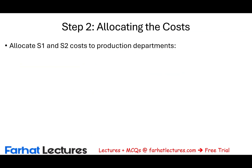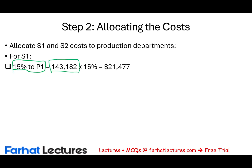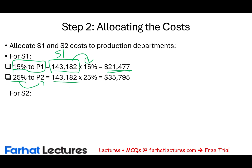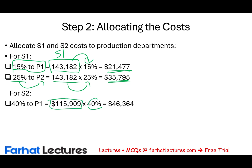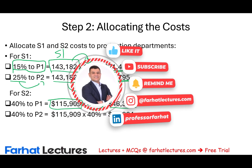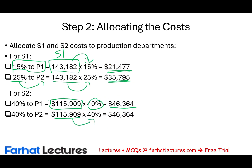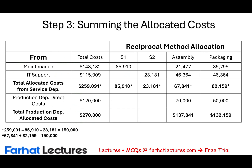Now we allocate S1 and S2 to the production departments. For S1 ($143,182): 15% goes to P1, which is $21,477, and 25% goes to P2, which is $35,795. For S2 ($115,909): 40% goes to P1, which is $46,364, and the remaining percentage goes to P2. S2 serves P1 and P2 at 40% and 40% — essentially split the same way, giving $46,364 to each.